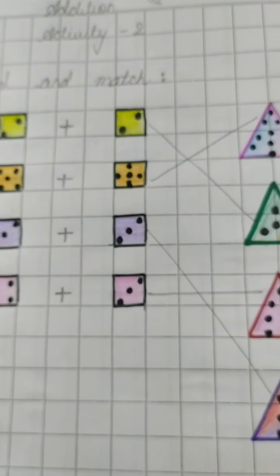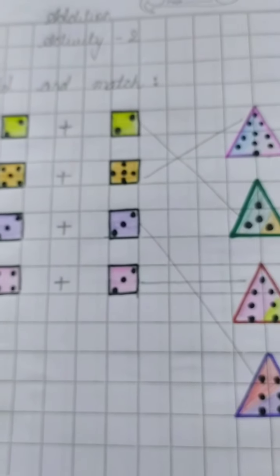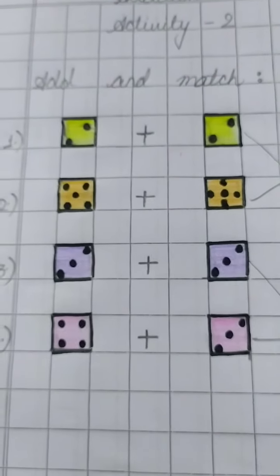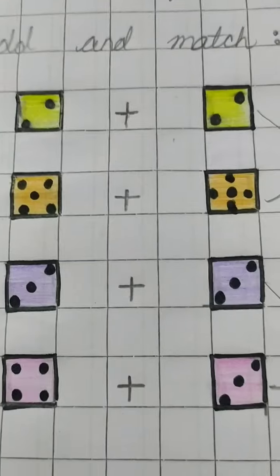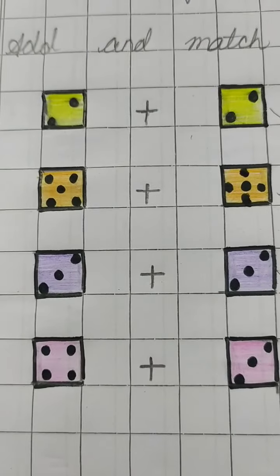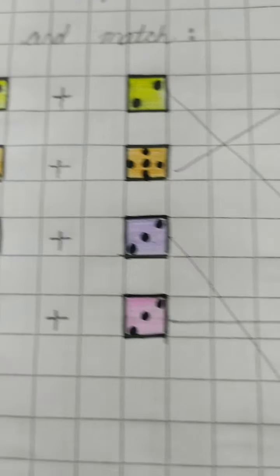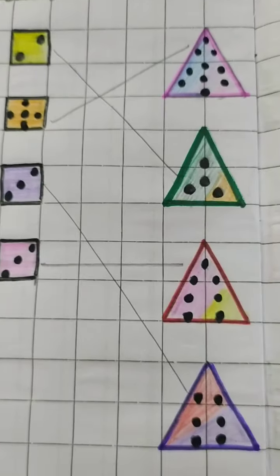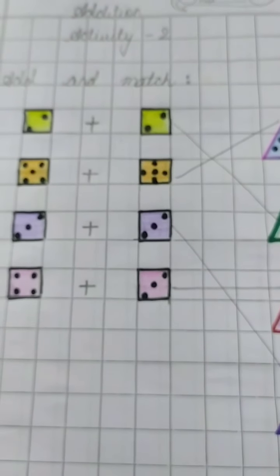Aapko aisa activity apna math fair notebook pe karna hain. So for that, you can take the help from your parents. Woh aapko aise blocks bina ke de sakne hain. Jiske inda woh dots draw kar denge. Aur dursre side pe bina denge. Aise triangles. Fir aap unko count karke match karna. Goodbye, take care.